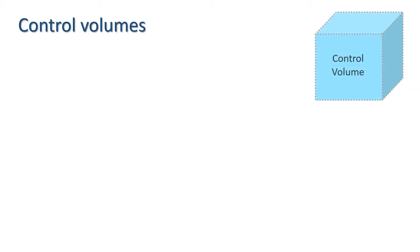In our derivation, we are going to use the principle of control volumes. A control volume is a region in space bounded by a control surface. The size and shape of a control volume are entirely arbitrary, but frequently they're made to coincide with solid boundaries or are assumed to be normal to the flow to simplify derivation of the equations.